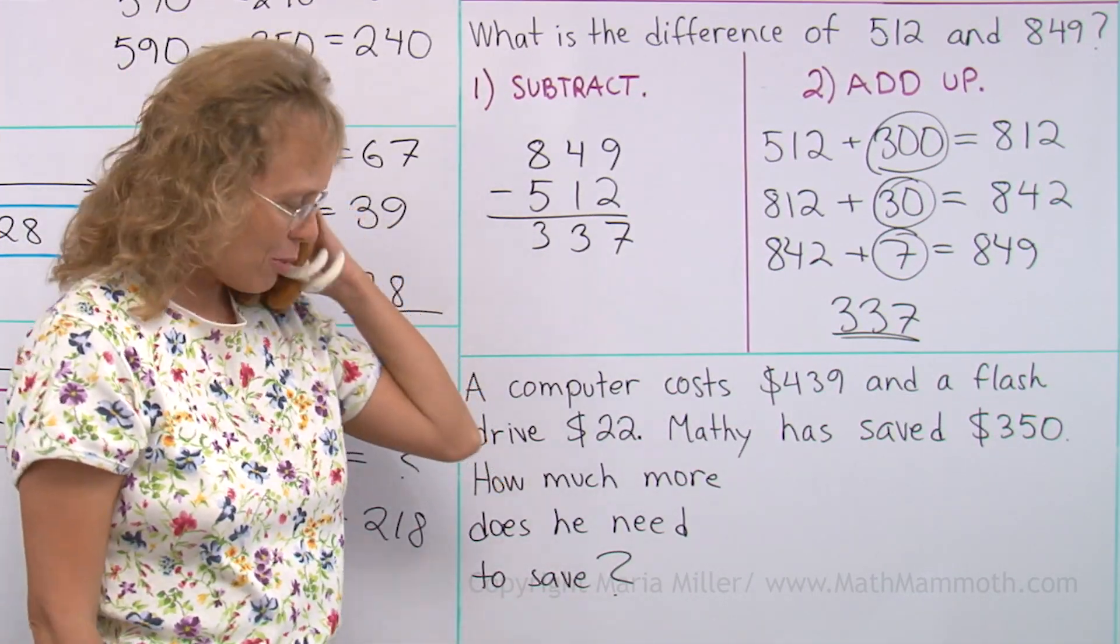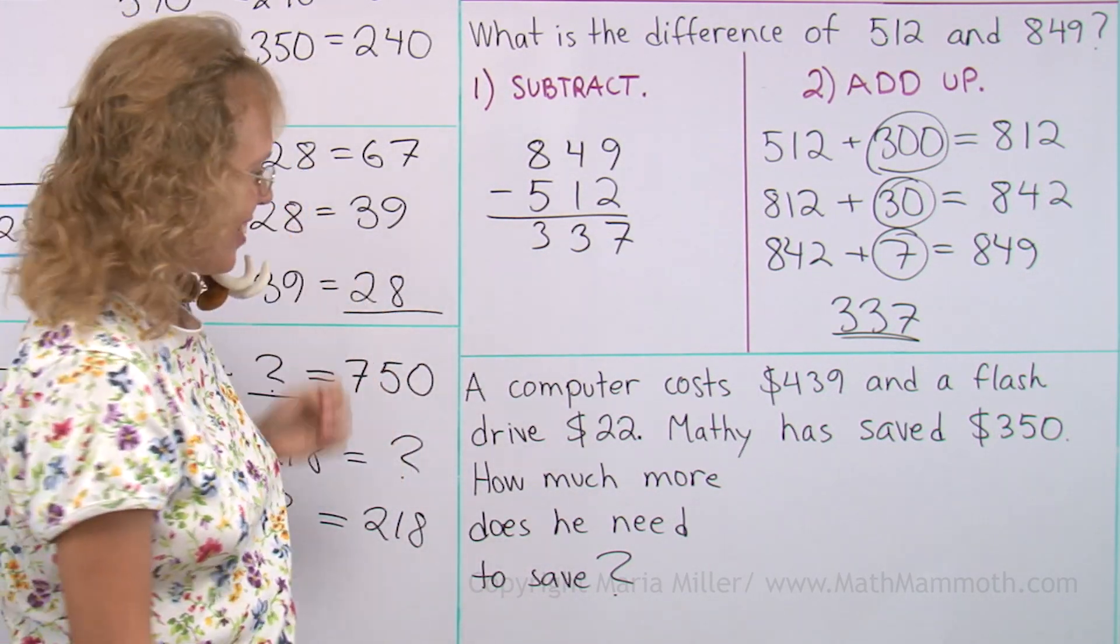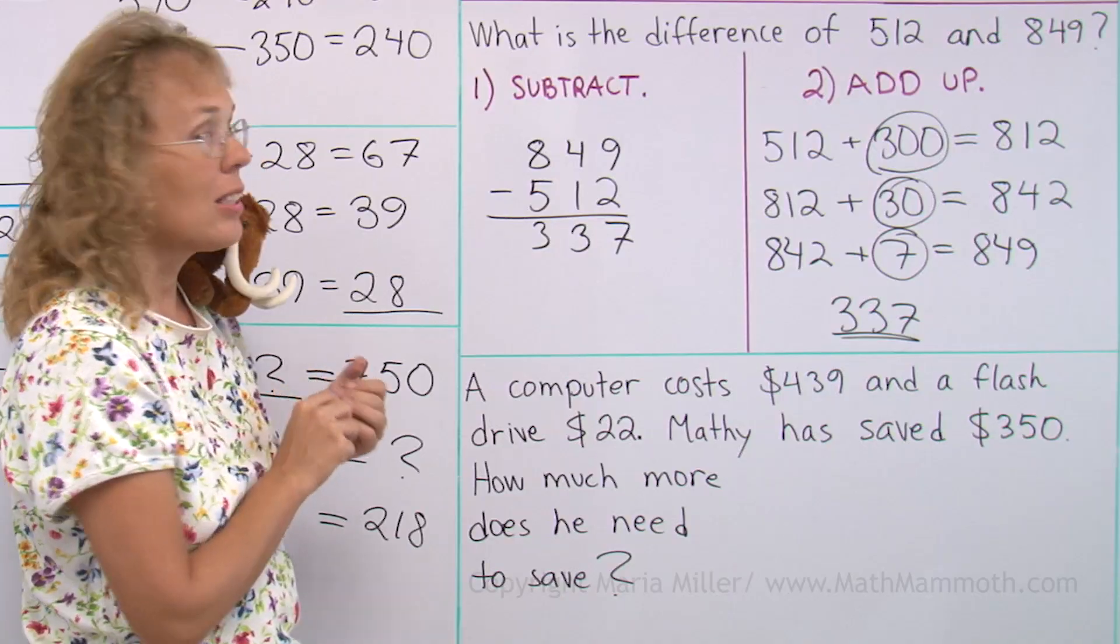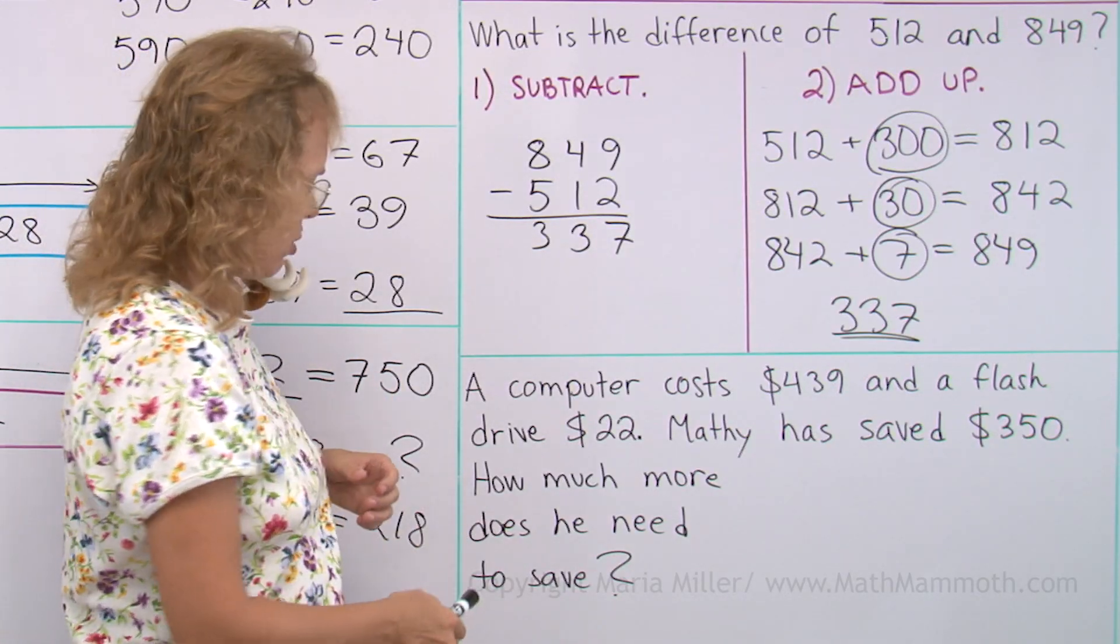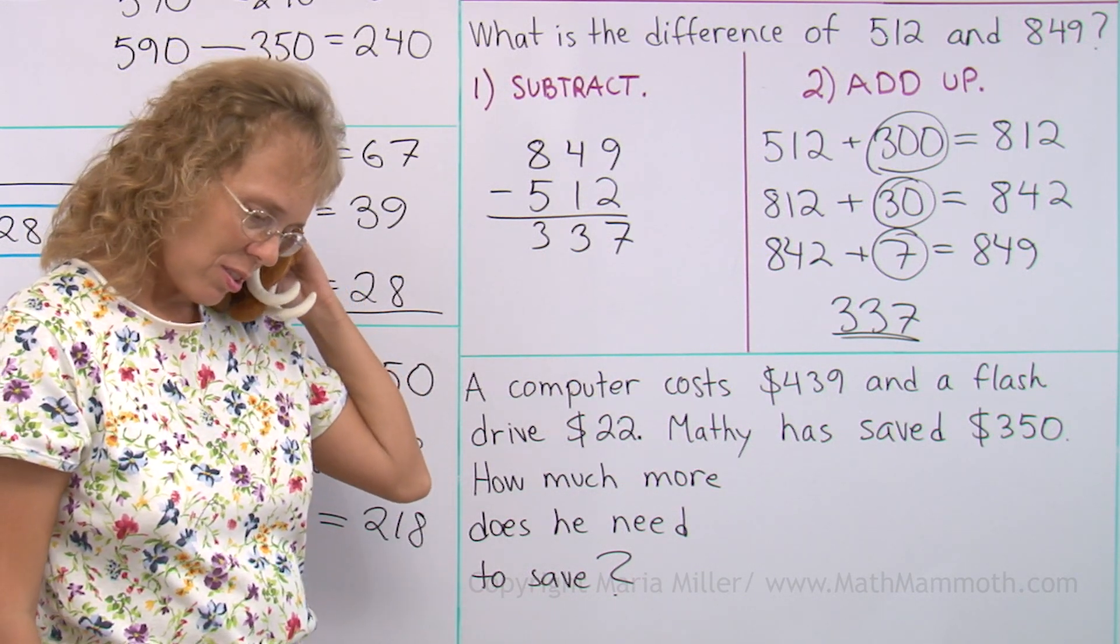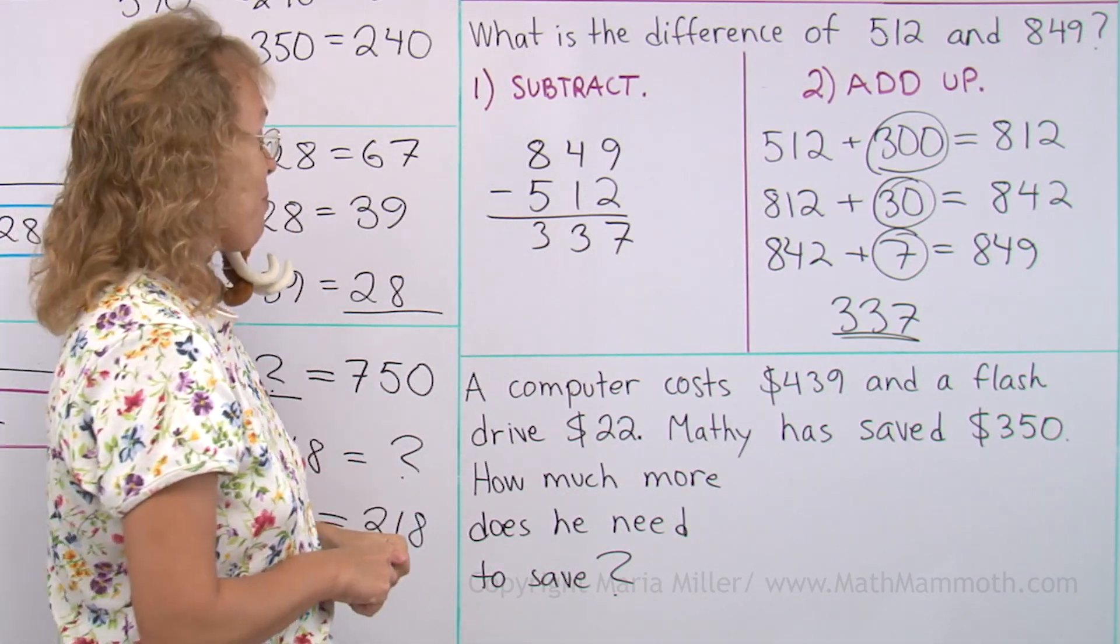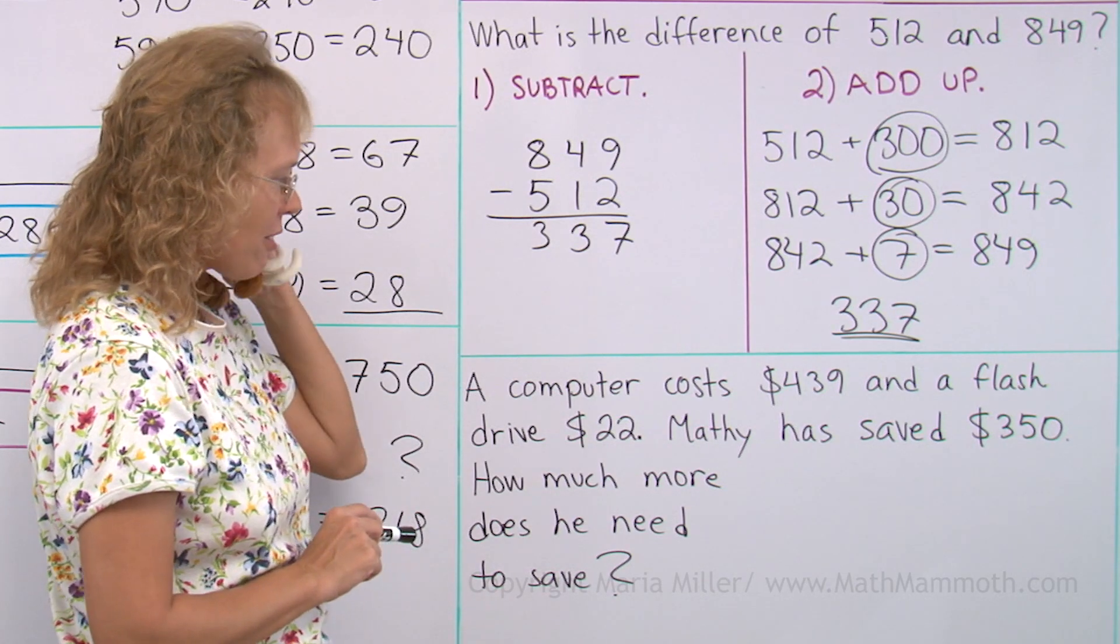Matthew, here's a word for you, or about you. A computer cost $439 and a flash drive $22. Matthew has saved $350 and he wants to buy those things. What do you need a computer for though? He wants to play math games, should have guessed. How much more does he need to save? So you have saved $350, you want to buy those two things, you don't have enough Matthew. How much more do you need to save? What shall we do?